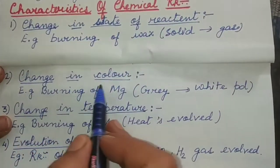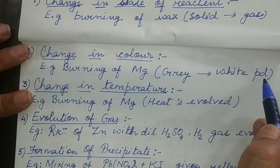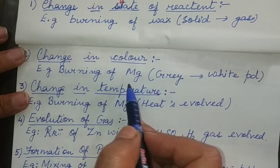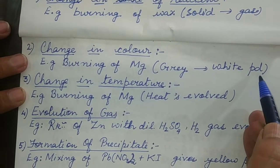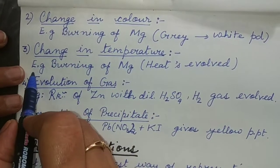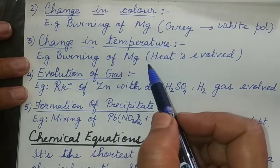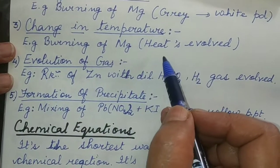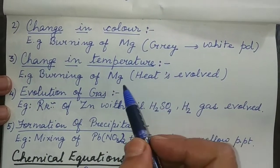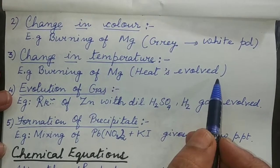Next is change in color. When the magnesium ribbon is burned, the grey metal magnesium gets converted into white powder — there is a change in color. Similarly, in rusting of iron, the grey iron metal is converted to reddish brown rust. Change in temperature is also a characteristic: when we burn magnesium ribbon, heat is evolved — it is highly exothermic. Not every time is heat given out; many times heat is taken in or light is given out. Any change in temperature noticed shows that a chemical reaction is occurring.